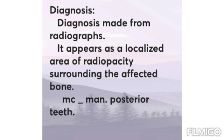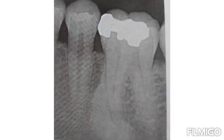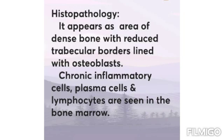Condensing Osteitis mostly affects mandibular posterior teeth and presents as a localized area of radiopacity surrounding the affected root. This picture shows radiopacity around the mesial root of the mandibular first molar.